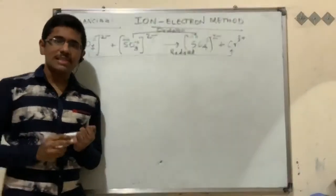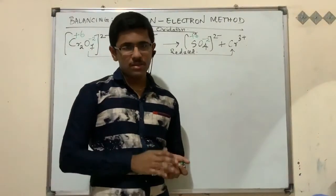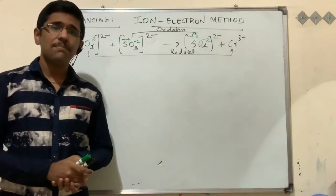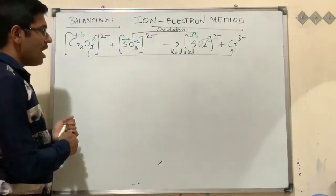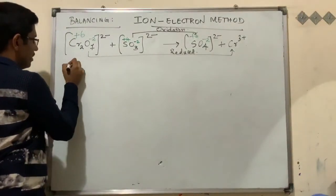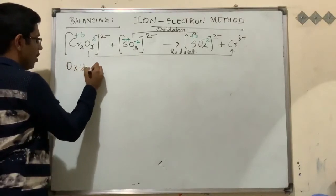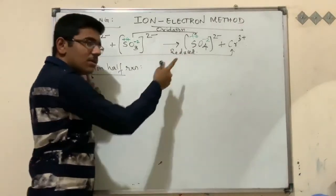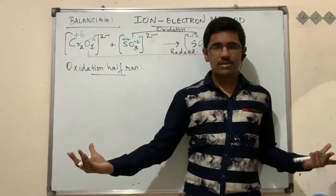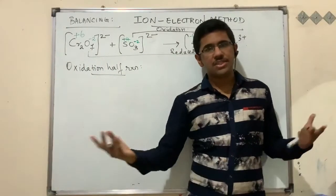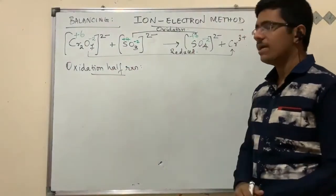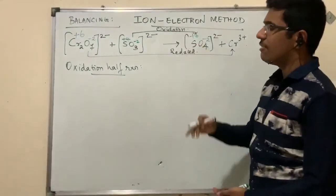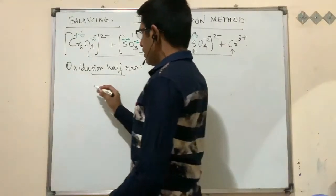The ion-electron method is also known as the half-reaction method because we split the overall redox reaction into two separate half-reactions: one for oxidation and one for reduction. The oxidation half-reaction involves sulfite being oxidized to sulfate ion, and the reduction half-reaction involves dichromate being reduced to chromium(III) ion.